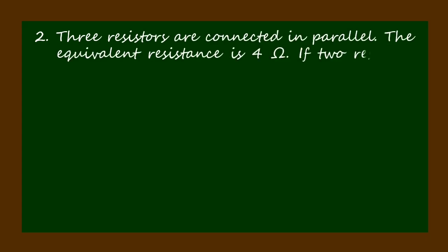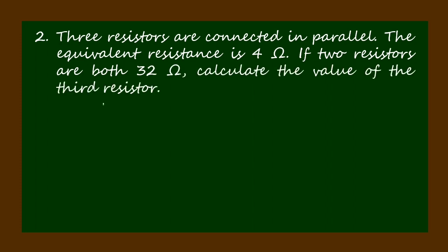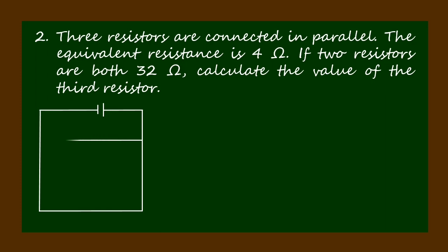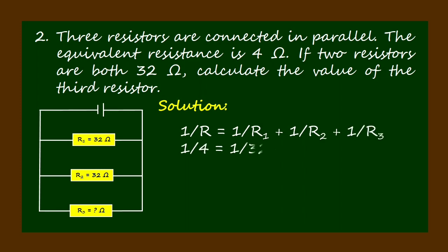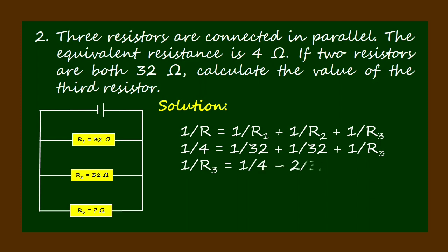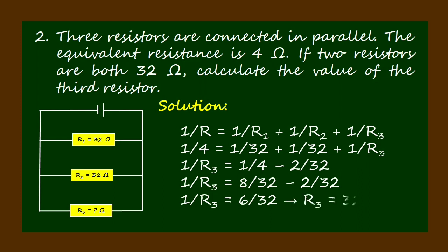Three resistors are connected in parallel. The equivalent resistance is 4 ohms. If two resistors are both 32 ohms, calculate the value of the third resistor. Let's draw the circuit diagram. Solution: 1 over R equals 1 over R1 plus 1 over R2 plus 1 over R3; 1 over 4 equals 1 over 32 plus 1 over 32 plus 1 over R3. Then 1 over R3 equals 1 over 4 minus 2 over 32, which equals 8 over 32 minus 2 over 32 equals 6 over 32. Therefore R3 equals 32 over 6, which is 5.33 ohms.